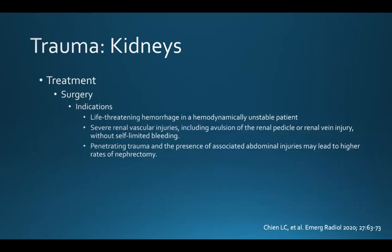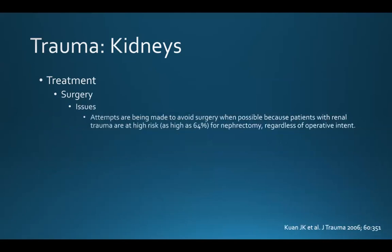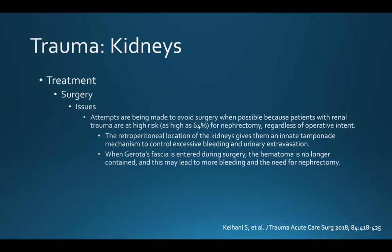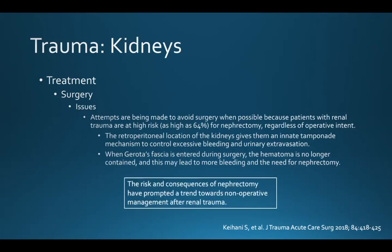Indications for surgery include life-threatening hemorrhage in hemodynamically unstable patients, severe vascular injuries including avulsion of the renal pedicle or renal vein injury without self-limited bleeding, and penetrating trauma with associated abdominal injuries. The reason to avoid surgery is that patients with renal trauma are at high risk for nephrectomy regardless of operative intent — this risk can be as high as 64%. The retroperitoneal location gives the kidney an innate tamponade mechanism, but when surgery is performed, Gerota's fascia is entered, the hematoma is no longer contained, which can lead to more bleeding and subsequent nephrectomy.